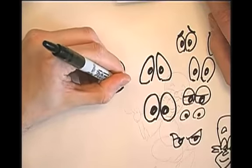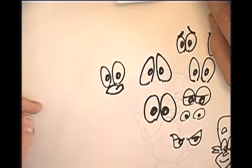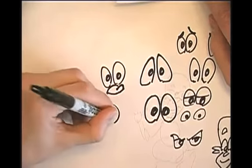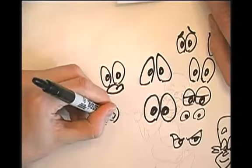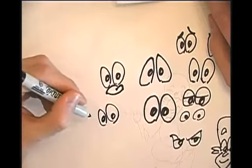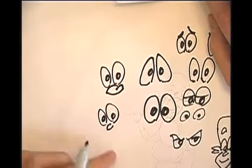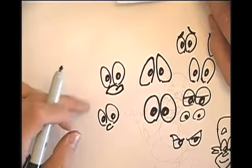So if I wanted to give a character sort of an old man type look, I'd give him a big old nostril like that. Whereas if I wanted the same character with the same eyes to look a little younger, I'd give him a tiny nose and it's kind of crazy the difference that that makes.